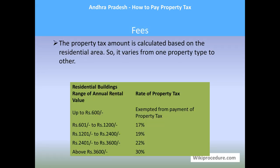The property tax amount is calculated based on the residential area and varies from one property type to another. For residential buildings, the tax slabs based on annual rental value are: up to ₹600 — exempted; ₹601 to ₹1,200 — 17%; ₹1,201 to ₹2,400 — 19%; ₹2,401 to ₹3,600 — 22%; above ₹3,600 — 30% of the annual rental value.